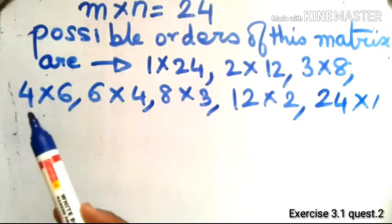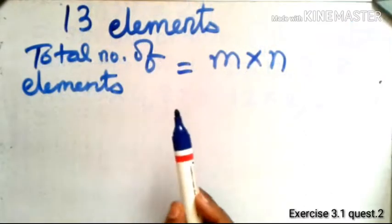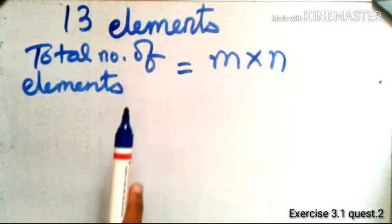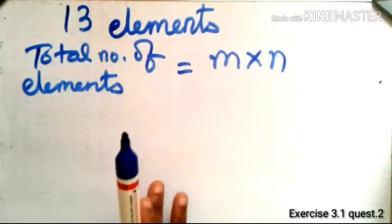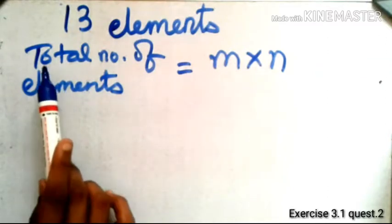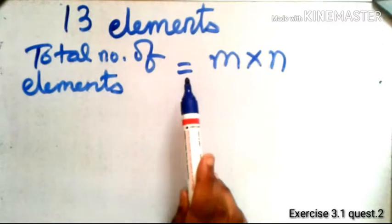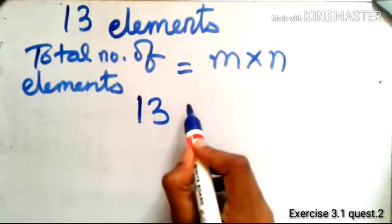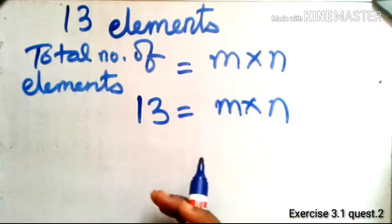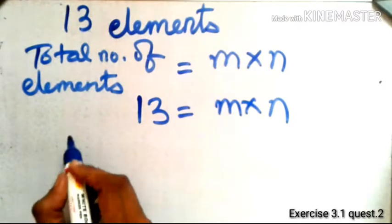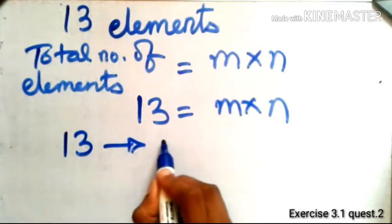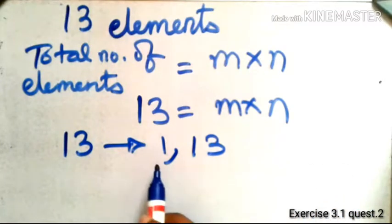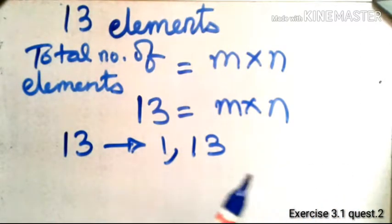The second part of the question asks: if a matrix has 13 elements, what are the possible orders? Using the same formula, 13 = m×n. We need to find the factors of 13. Since 13 is a prime number, it has only two factors: 1 and 13 itself.